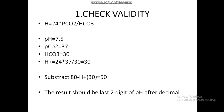Validity tells us whether the ABG can be interpreted or not. We check it using the formula: H⁺ = 24 × PCO2 / HCO3. Suppose the ABG given has PCO2 = 37 and HCO3 = 30. Then H⁺ = 24 × 37 / 30 = 30. We then subtract this from the universal number 80: 80 − 30 = 50. This value of 50 should match the last two decimal digits of the pH, which here is 7.50.